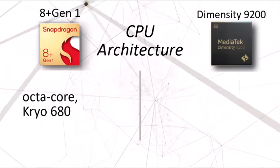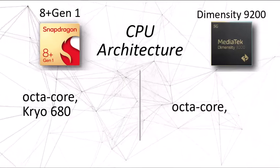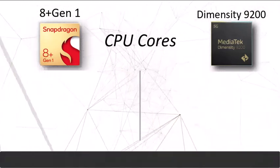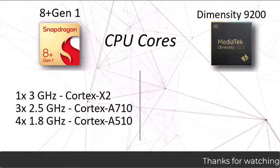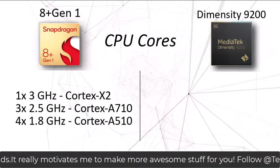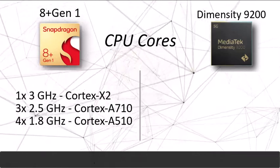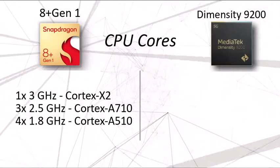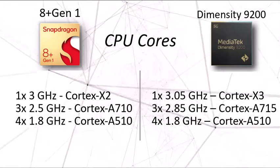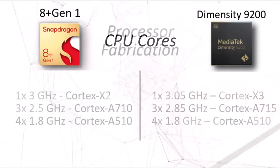Moving forward with CPU architecture, both processors are octa-core. The CPU architecture has not been specified for the Dimensity 9200, but for Snapdragon it's the Kryo 680. The Snapdragon 8 Plus Gen 1 has one powerful core at 3 GHz with 4 power efficiency cores at 1.8 GHz. The Dimensity 9200 comes with one core at 3.05 GHz, which is slightly better, and the efficiency cores are similar. The average performance cores are better on the Dimensity but the power efficiency cores are similar.